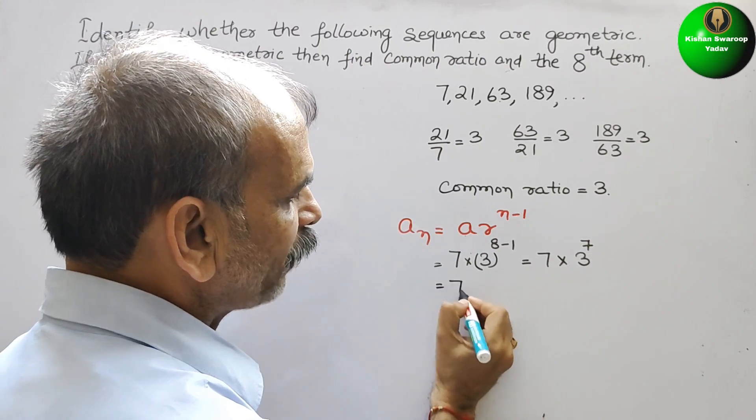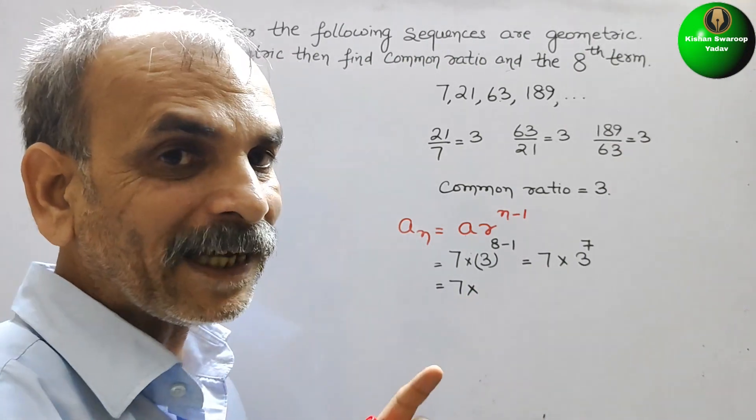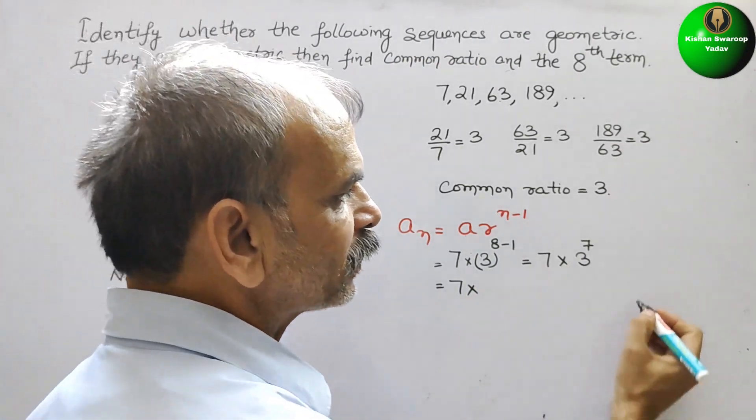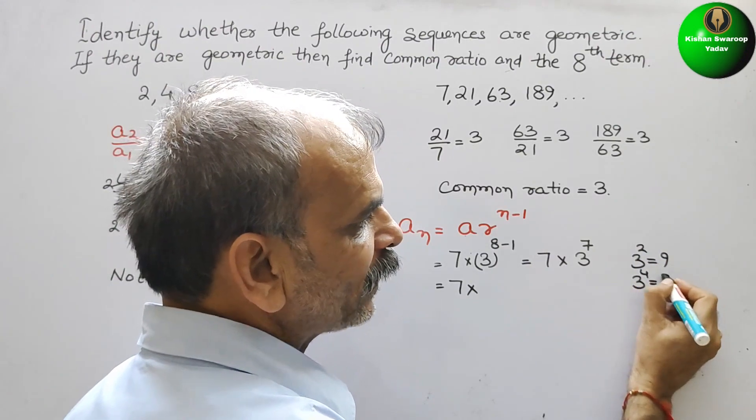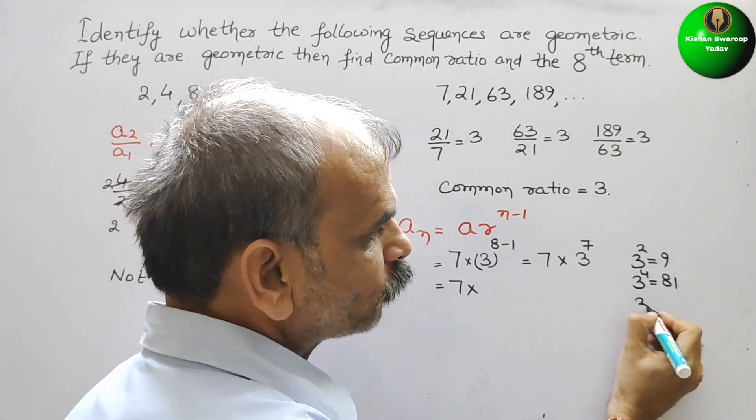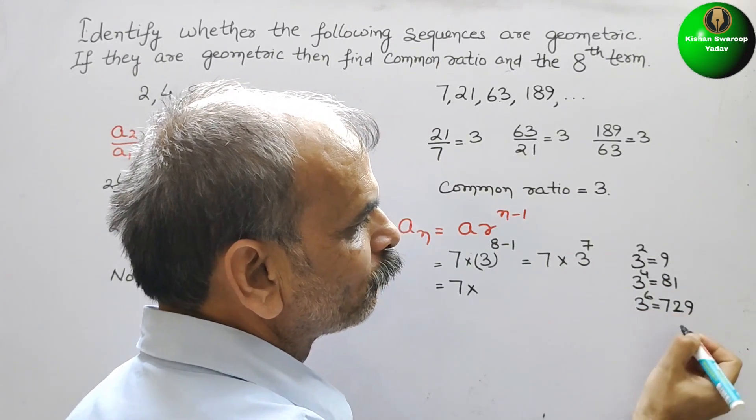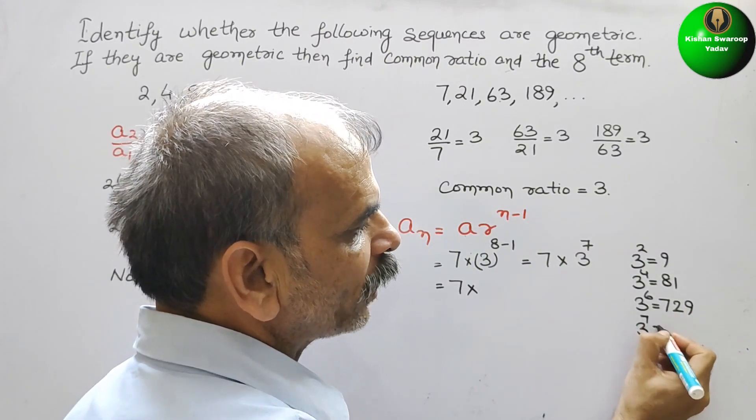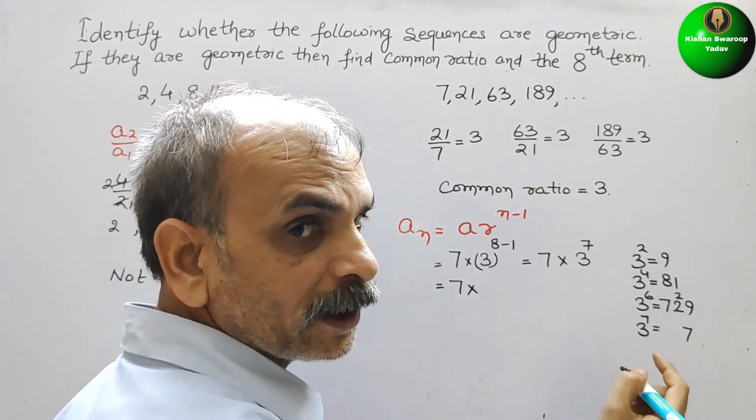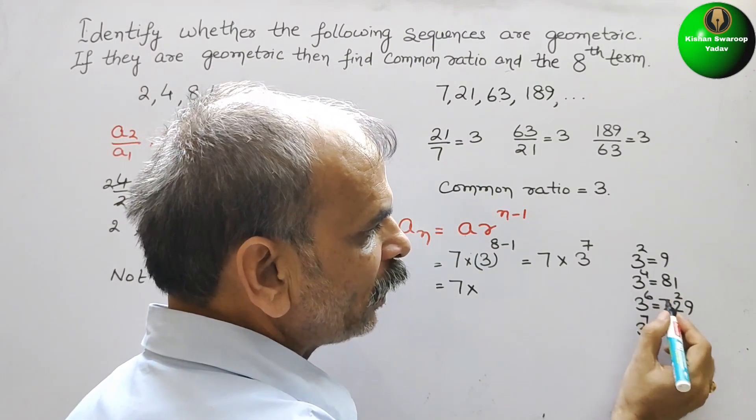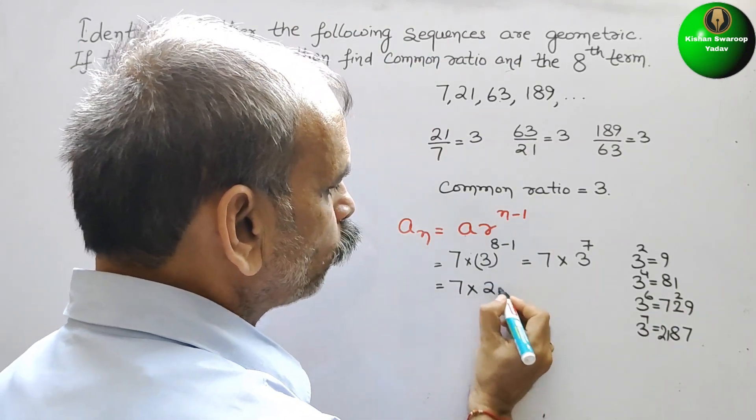Now find out the value. It will be 7 into 3 to the power 7. We have to multiply 3 seven times. 3 square is 9, 3 to the power of 4 is 81, 3 to the power of 6 is 729. Again, we have to go for one more 3. So 3 into 9 is 27, 2 carry. 3 into 2 is 6 plus 2 is 8. And 3 into 7 is 21. Therefore, it will be 2187.